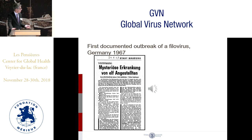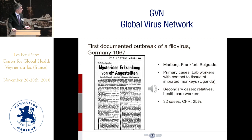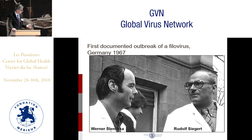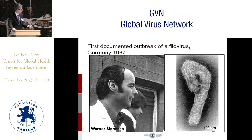While filoviruses are mainly active in Africa, the first documented outbreak took place in Germany in 1967 — 50 years ago. It was introduced by a shipment of infected monkeys imported from Uganda to a local vaccine manufacturer in Marburg. At that time, they used primary monkey kidney cells for vaccine production, and those imported monkeys were infected with a novel virus, which was later named Marburg virus. Werner Slenska and Rudolf Siegert were very important for the identification of the virus three months after the first patients appeared, producing the first electron micrograph of Marburg virus.